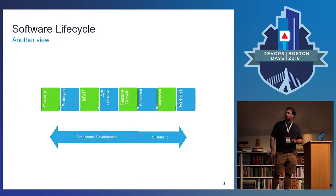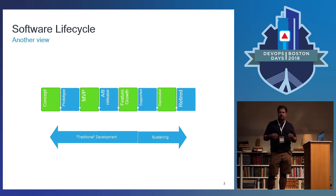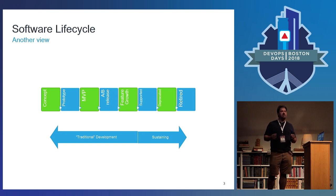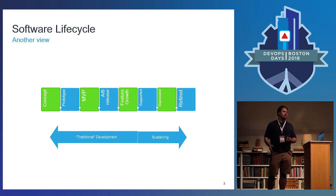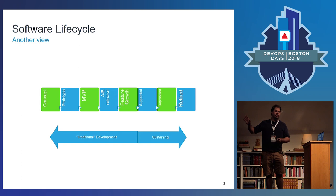There's also a software lifecycle where you have a piece of software that starts off in concept. You prototype it, you do your alpha and beta testing, and then you do your release, at which point it's live to customers. There's still some feature growth, but once you get past your alpha and beta releases, you have a live piece of software in what I consider the sustaining part of its lifecycle. That's going to go through a supported phase, eventually be deprecated and retired.